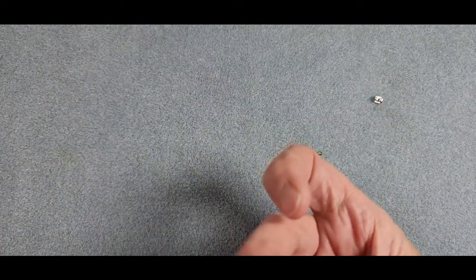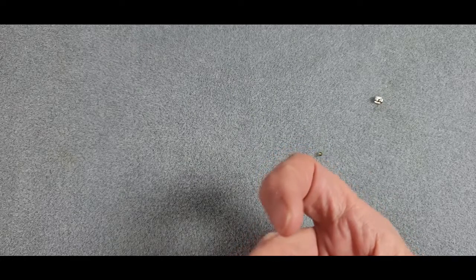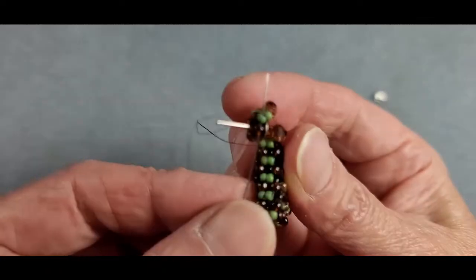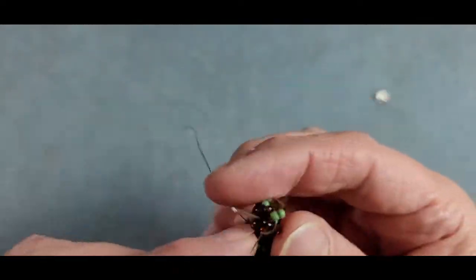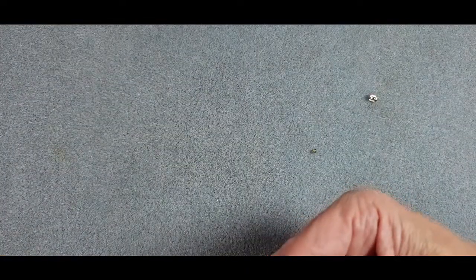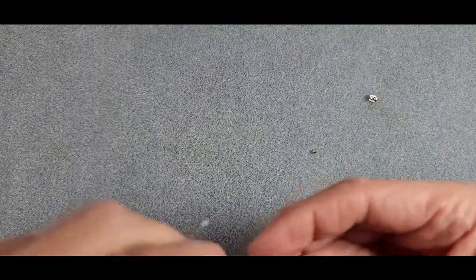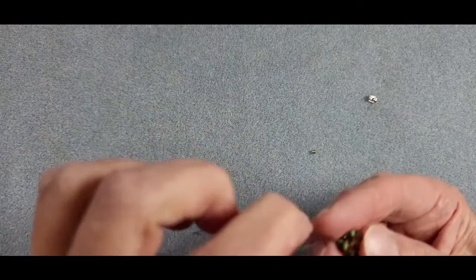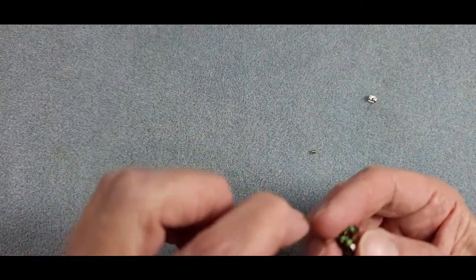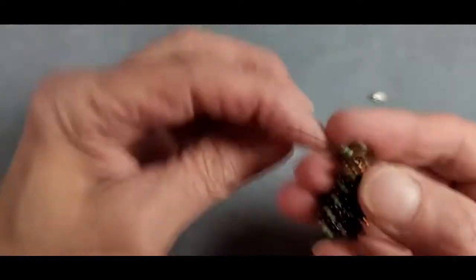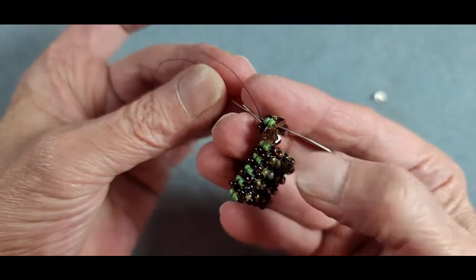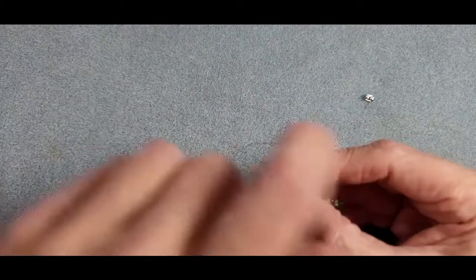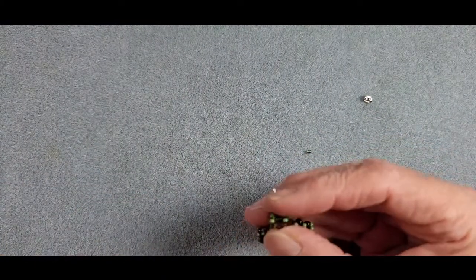So what we need to do is sew over through the 8-0 at the bottom right here to follow our thread path. So come through the 8-0, come up through the next two 11-0s. And I have pictures, step-by-step pictures of this in a corresponding blog post on the alluringbeeboutique.com.